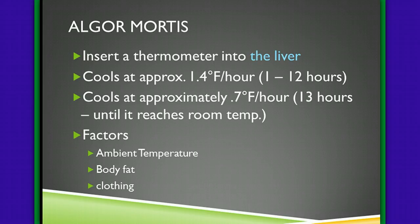After 12 hours, starting with hour 13, the process slows down to 0.7 degrees Fahrenheit per hour until it reaches room temperature or ambient temperature. Factors affecting algor mortis include ambient temperature — if it's really hot, we won't see a decrease in body temperature; if it's really cold, it'll occur faster. If the person is obese and has a lot of body fat, this process takes longer. The type of clothing matters too — if somebody is in a full snowmobile suit, it'll take much longer for the body temperature to cool down.